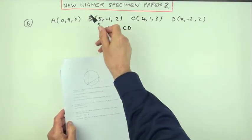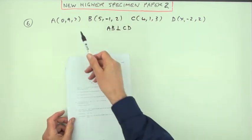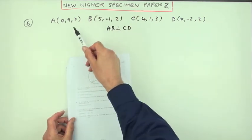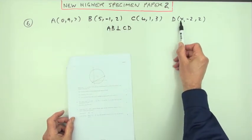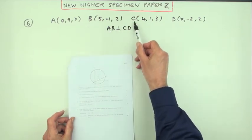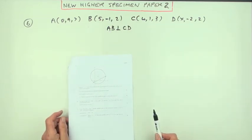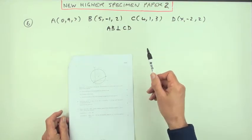So question six from this new higher specimen paper, paper two. It gives you four points with their three-dimensional coordinates, apart from one of them, and you've defined this value such that line segment AB is perpendicular to line segment CD. As soon as you hear perpendicular, you think scalar product, so I want the vectors.